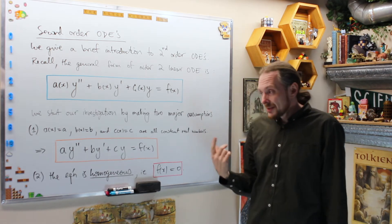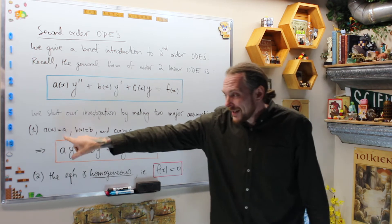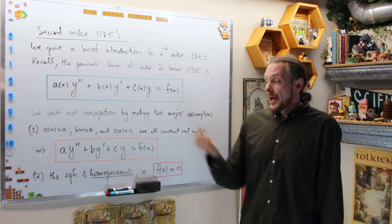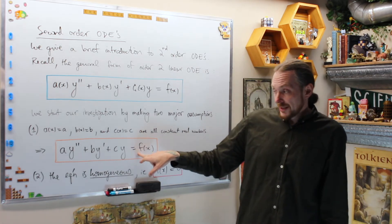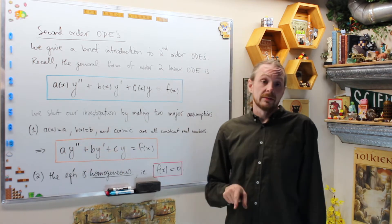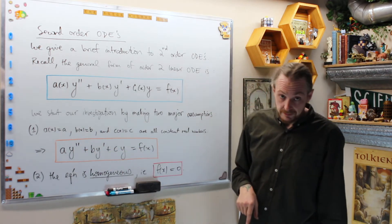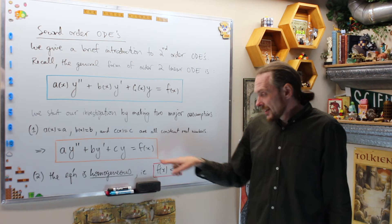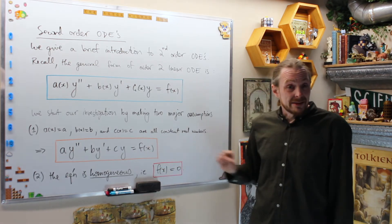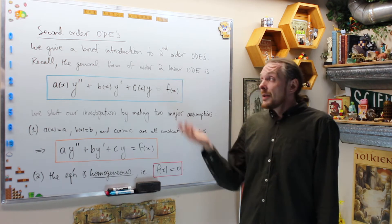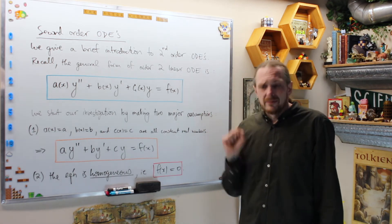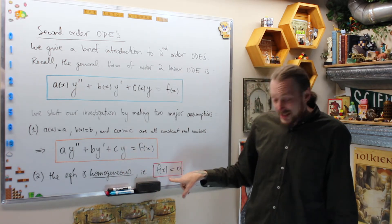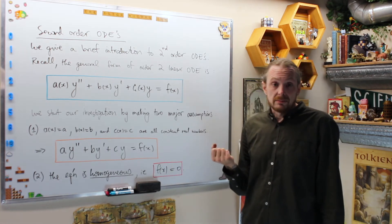We're going to start with two major assumptions. The first one is that all the coefficients are constant real numbers — they're not functions of x. Therefore we get a constant coefficient second order differential equation. The second assumption is that the equation is homogeneous, meaning the right-hand side f(x) is identically the zero function. This gives us the equation we're going to study: a second order constant coefficient homogeneous linear differential equation.